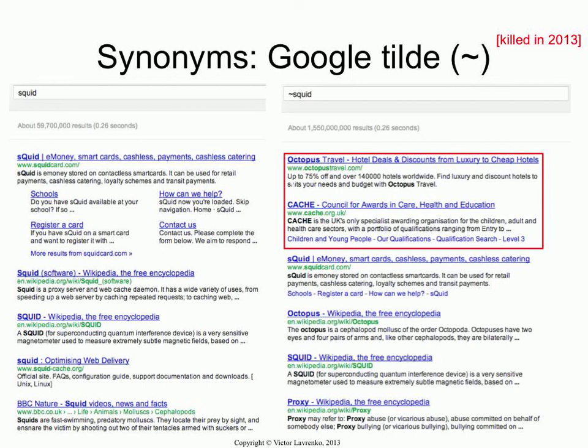And we get two new results. So let's look at these results and see how well Google is doing. The first one is octopus travel. Now, squid is not really related to travel, but this has the word octopus in it, so I'll forgive it for that — octopus and squid are close enough. But what is that? Council for Words and Care, Health, and Education.